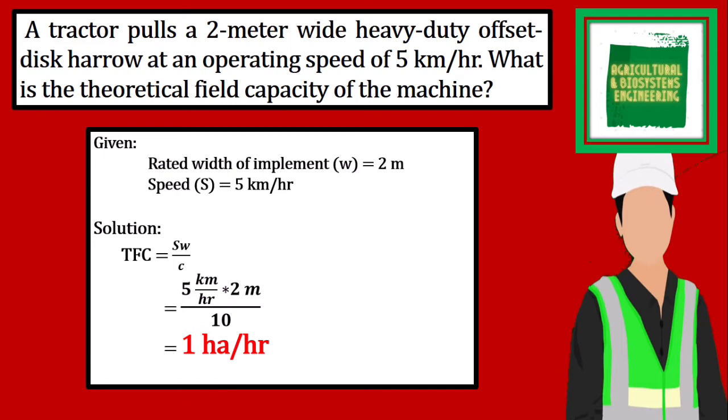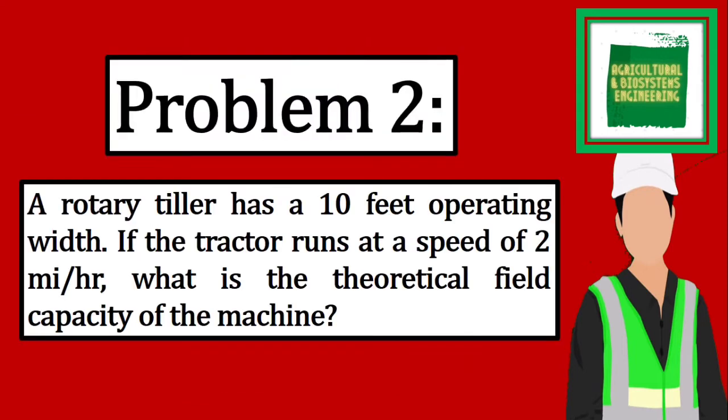Next, we proceed with problem 2. A rotary tiller has a 10-feet operating width. If the tractor runs at a speed of 2 miles per hour, what is the theoretical field capacity of the machine?